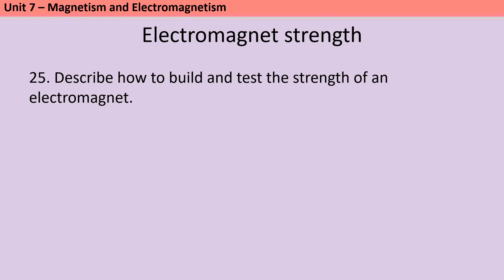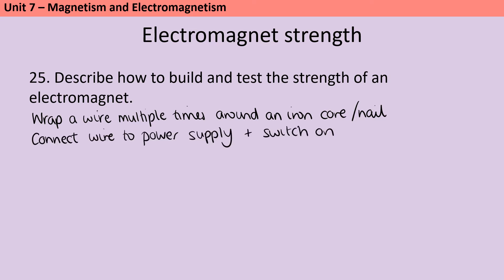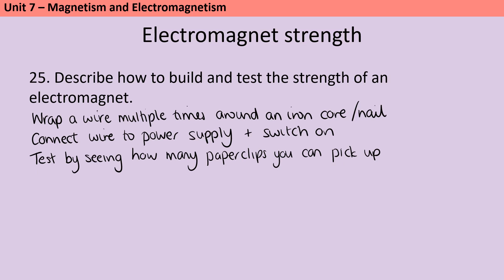Building an electromagnet is fairly straightforward. An electromagnet is just a solenoid — a coil of wire that has an iron core inside it. Your first step is to wrap a wire multiple times around some kind of iron core; often in school we use a nail for this. Then you connect those wires to a power supply and switch it on. To test the strength of this electromagnet, we tend to pick up paper clips. You could test how many paper clips your electromagnet can pick up — the more paper clips you can pick up, the stronger your electromagnet is.